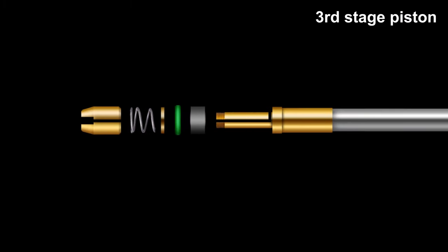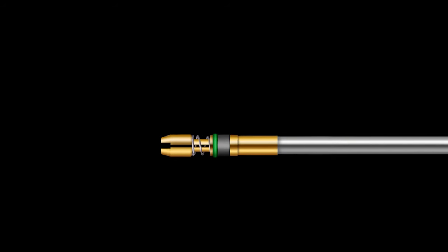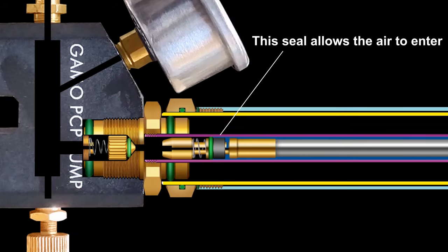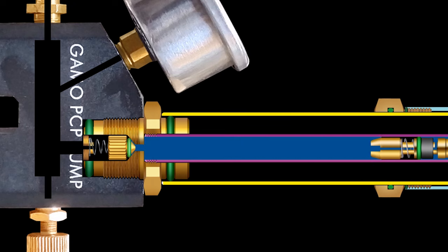Third stage piston consists of a screw, spring, washer, O-ring, and seal. Seal can close or open the air passage. Seal on the piston uncovers the air passage. It allows the air to go into the third tube.